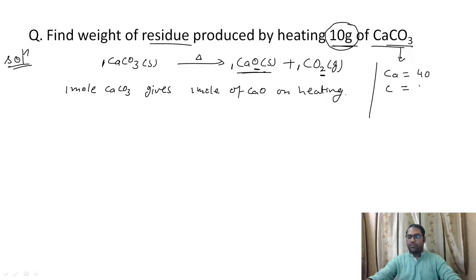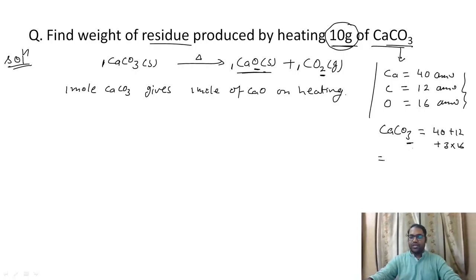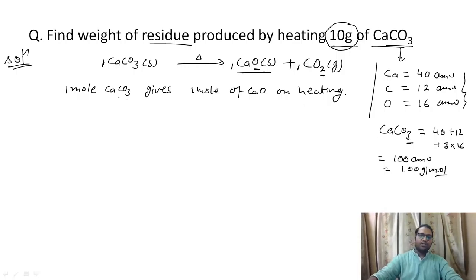The atomic weight of carbon is 12, and for oxygen it is 16. So the molar mass of calcium carbonate is 40 plus 12 plus 3 times 16, because there are 3 oxygens. By calculating this we get 100 g/mol.